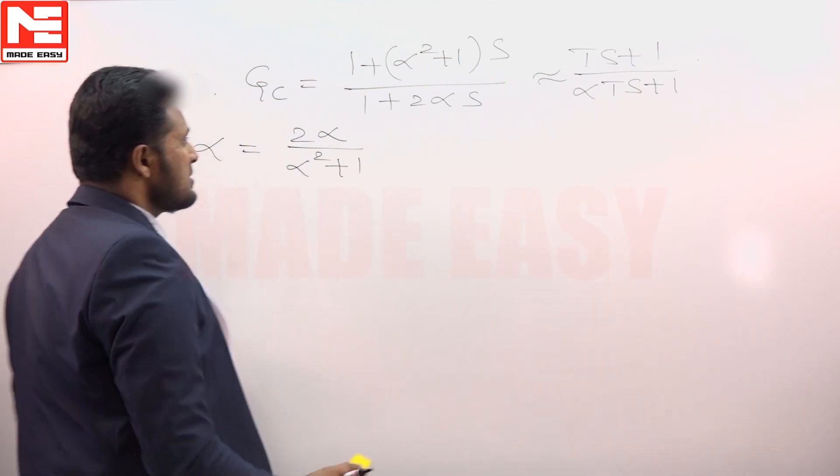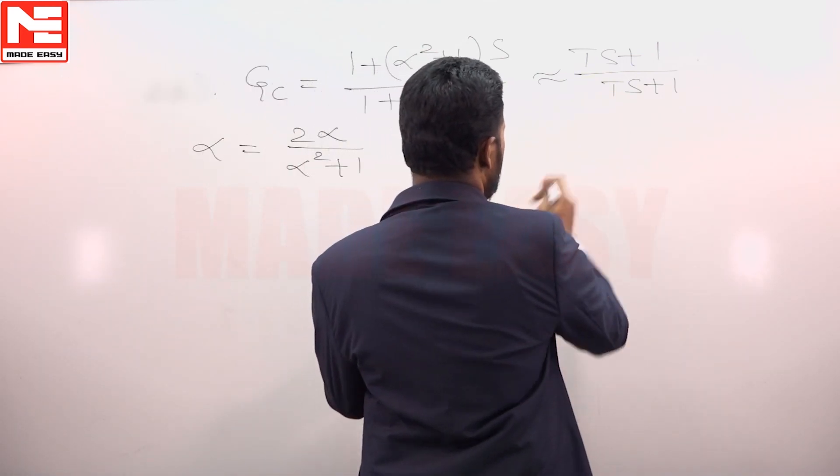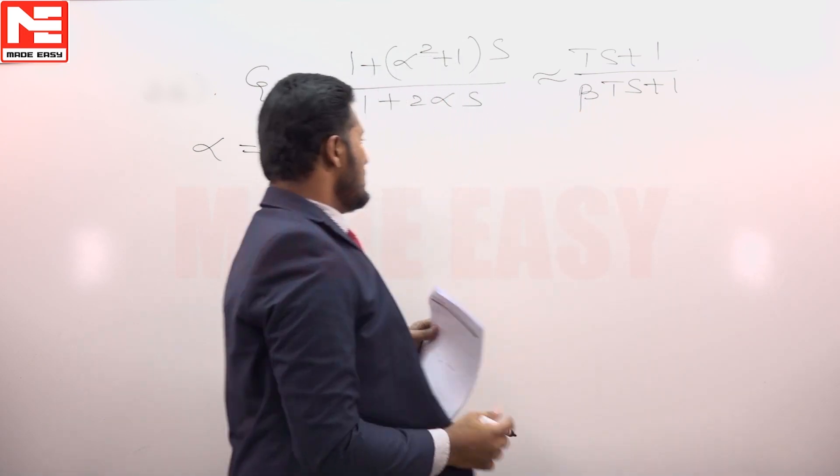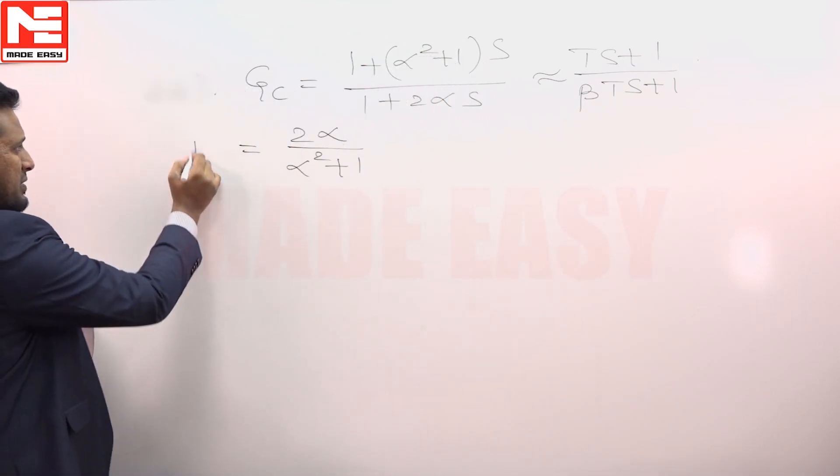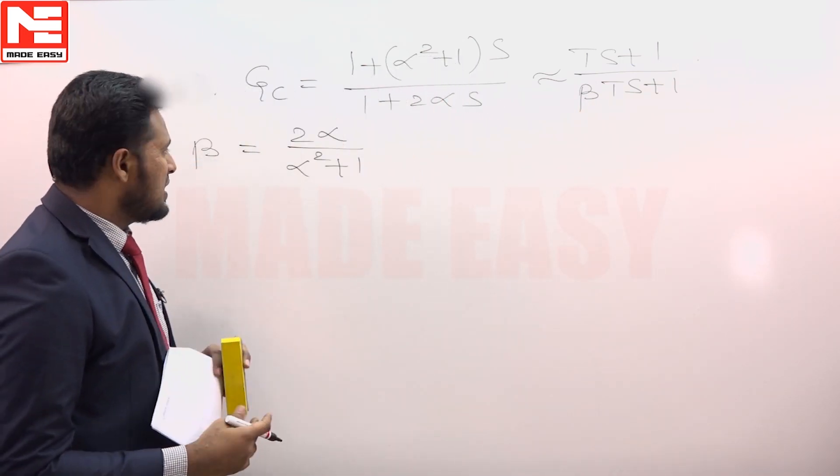Considering the parameter to be beta to avoid confusion, then we get the beta parameter of the system to be 2 alpha by alpha squared plus 1.